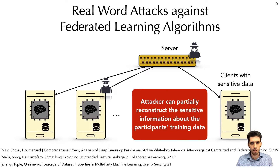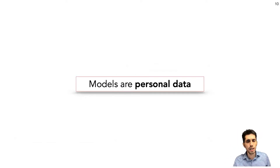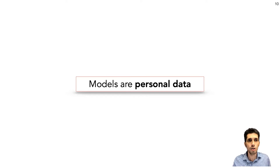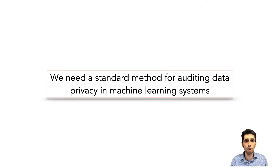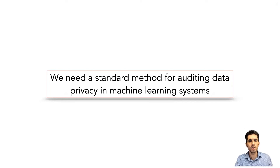In all these examples, we show that the adversary can indirectly learn information about the data of other participants. All these examples show that for the case of high dimensional models trained on sensitive personal data sets, the model is personal data. Models are as sensitive as the data on which they are trained. They have a tendency to memorize information about their training data that can be extracted potentially by inference attacks. So given that machine learning is being used widely on all sorts of personal data, we need to extend privacy auditing to ML in order to analyze the privacy risks of indirect information leakage.